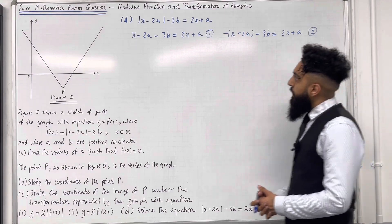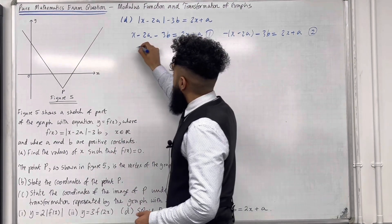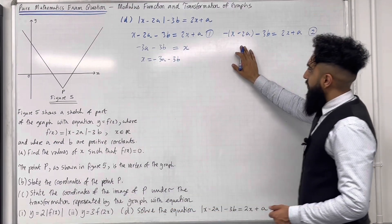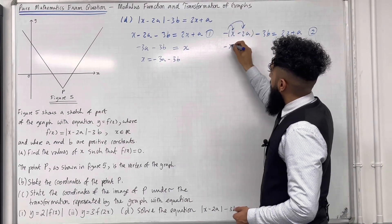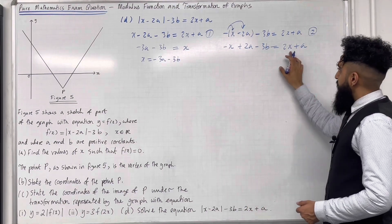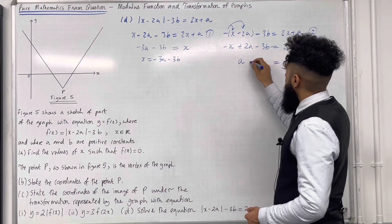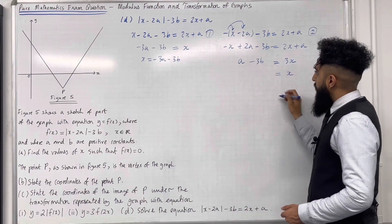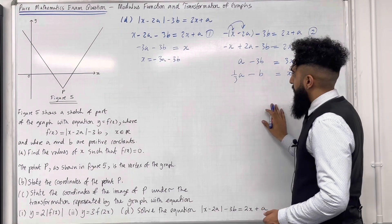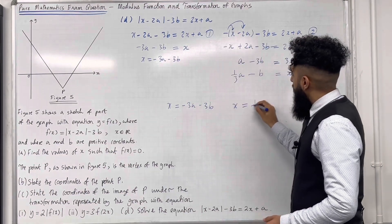Solving equation 1: 2x − x = x, and −2a − a = −3a, so x = −3a − 3b. Solving equation 2: expanding gives −x + 2a − 3b = 2x + a. So 3x = 2a − a − 3b = a − 3b, therefore x = a/3 − b. We obtain x = −3a − 3b and x = a/3 − b.